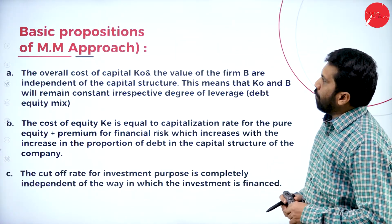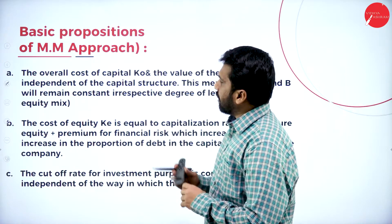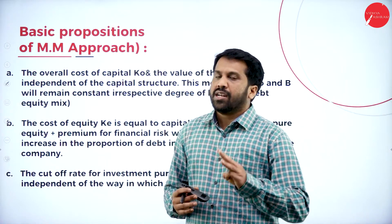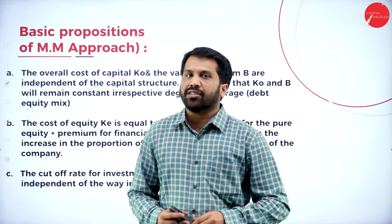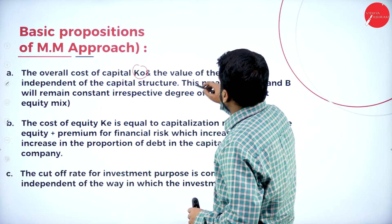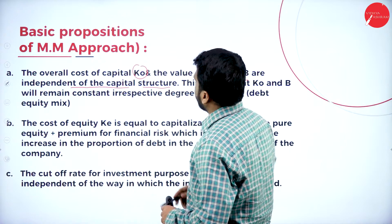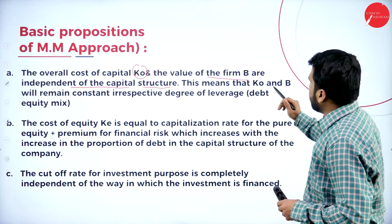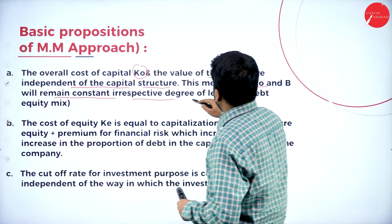Now we will talk about the Basic Propositions of the MM Approach. Once we cover the theory, we will work out 2 to 3 problems so you understand the formulas and calculations better. The overall cost of capital KO and the value of the firm V are independent of the capital structure. Both cost of capital and the value of the firm remain constant irrespective of the degree of leverage.